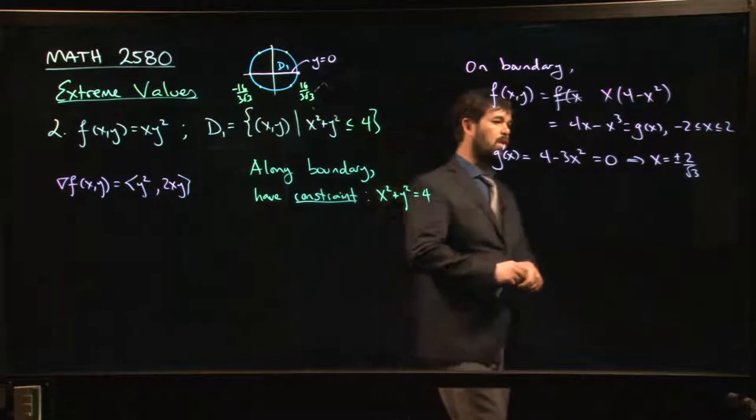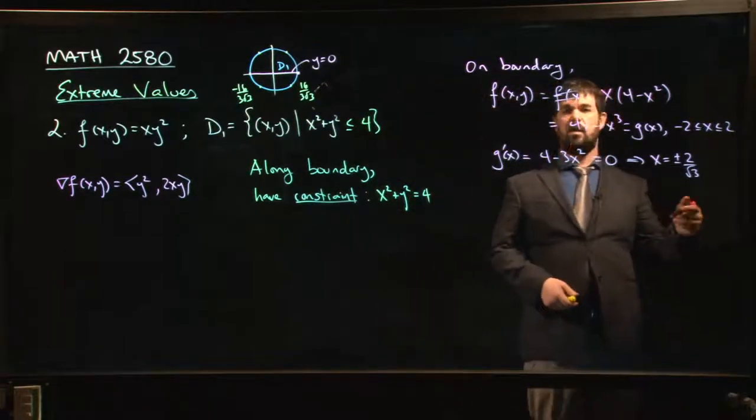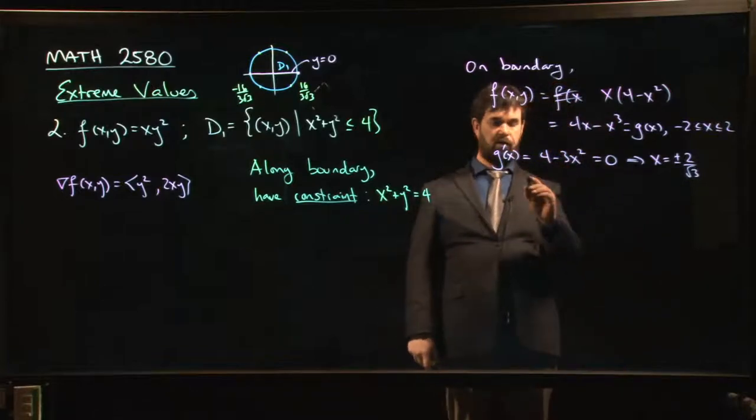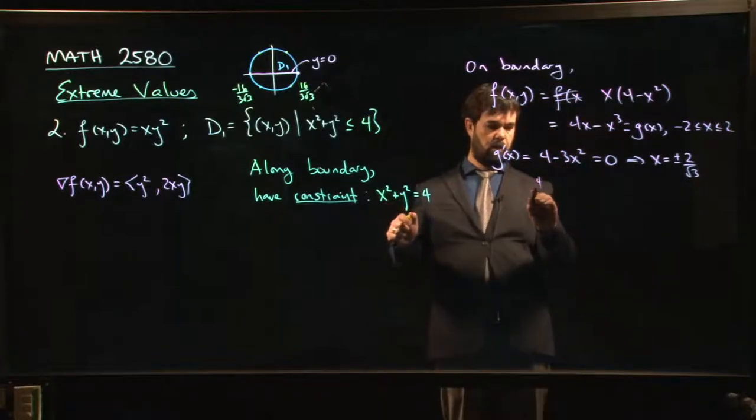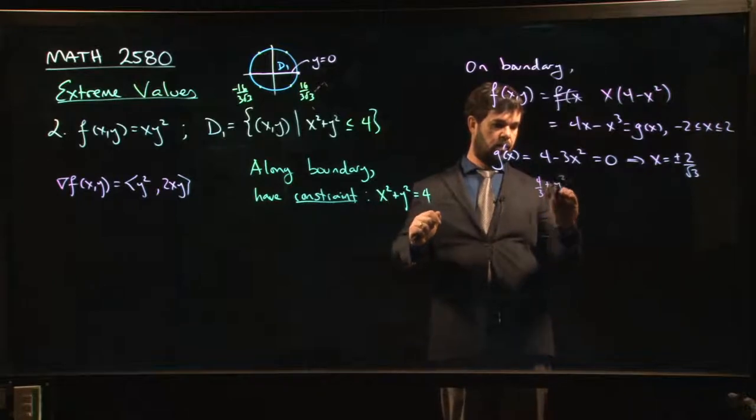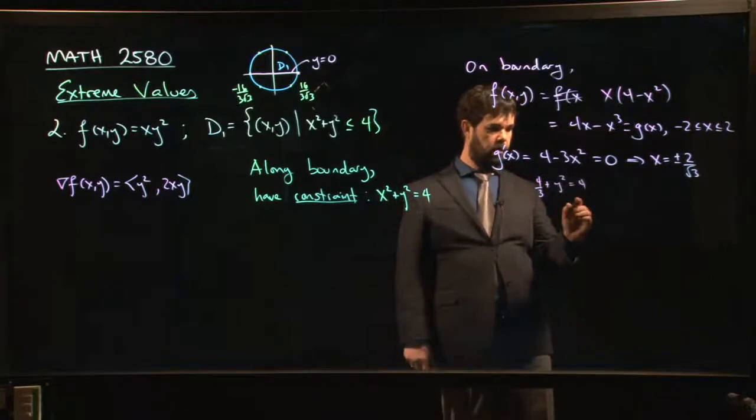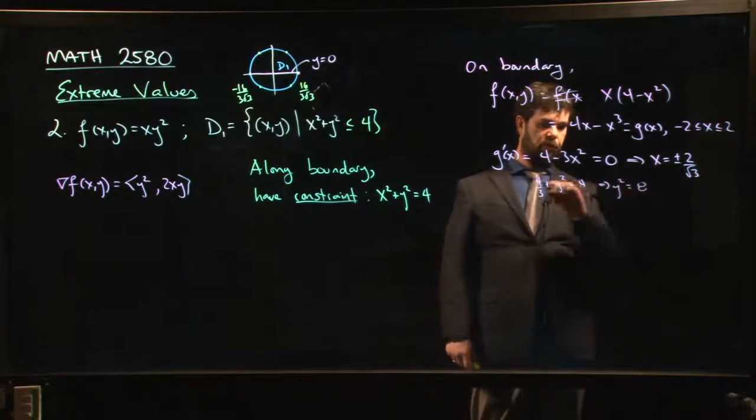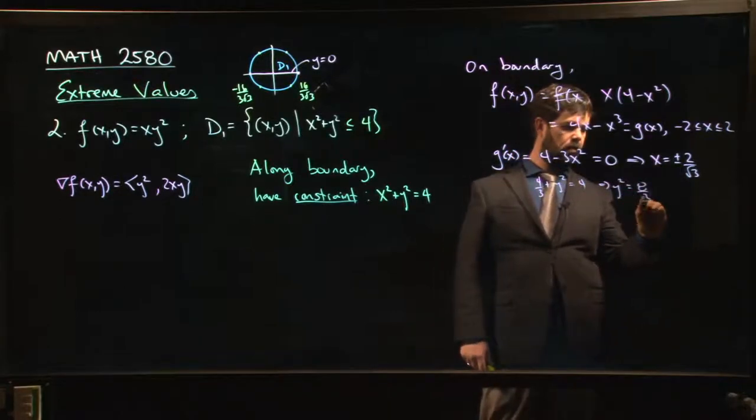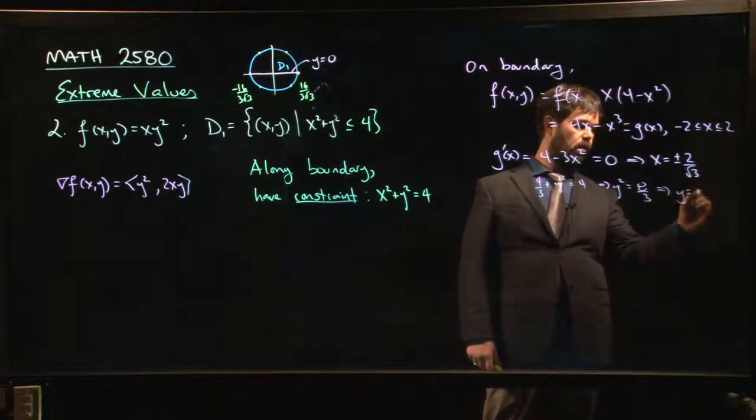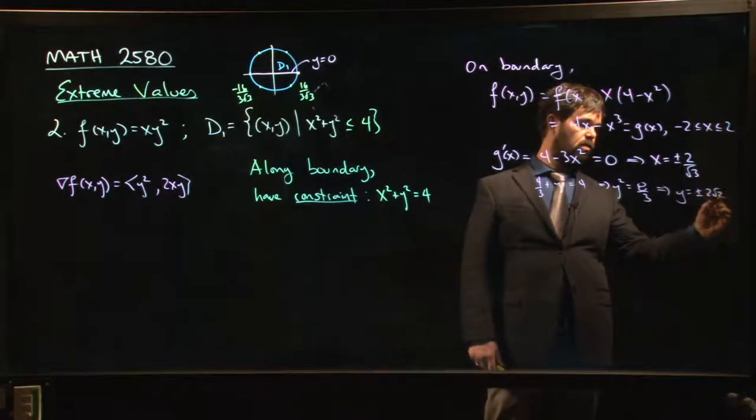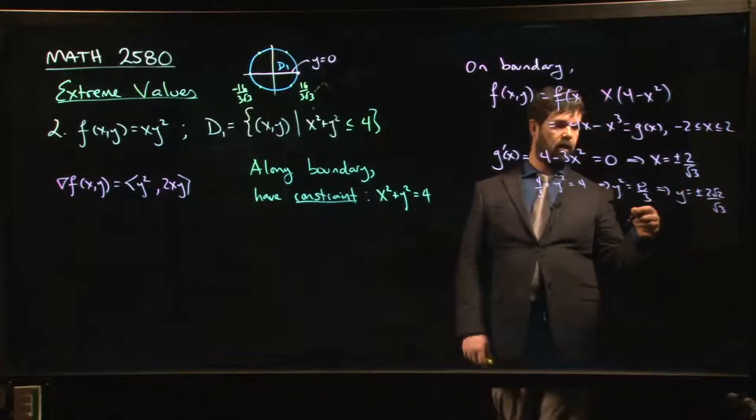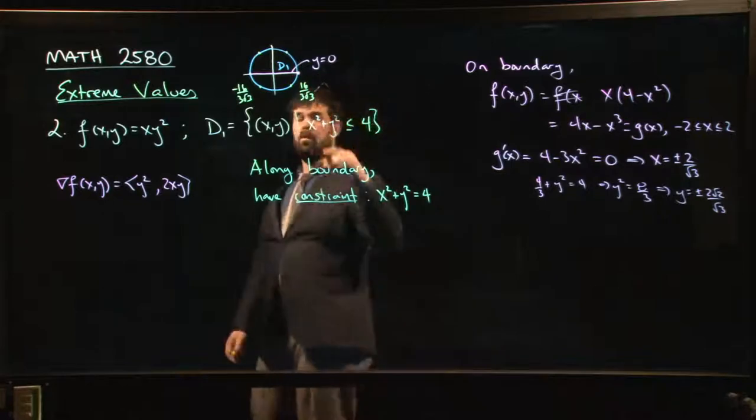If x is plus or minus 2 over root 3, then I can go back here. I can put that in. I can say that, well, so x squared is 4 thirds. So 4 thirds plus y squared equals 4. So y squared is 12 thirds minus 4 thirds gives me 8 thirds. So y is plus or minus 2 root 2 over root 3. And that gives me those four points on the circle that we found.